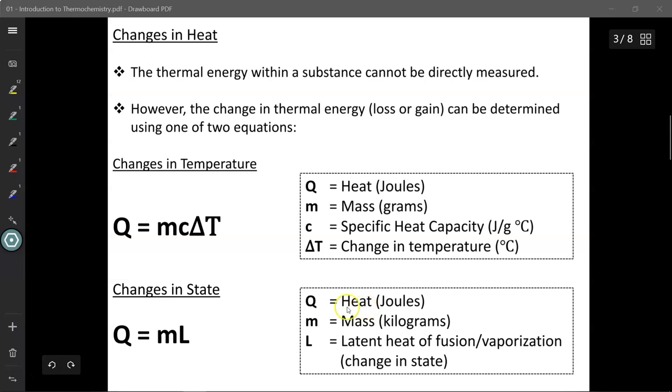Again, Q is the heat involved or the energy involved measured in joules, M is the mass typically measured in kilograms however, and L is the latent heat of fusion or vaporization, which is the change in state, how much energy is required to change that state. And again, this value is unique to every single substance.